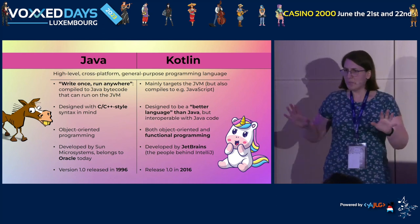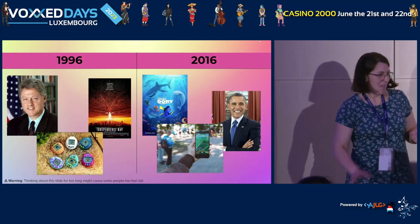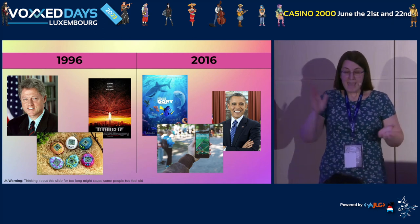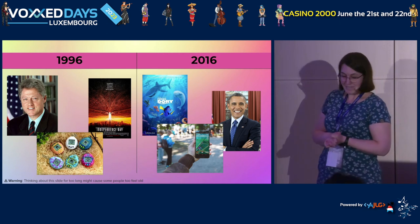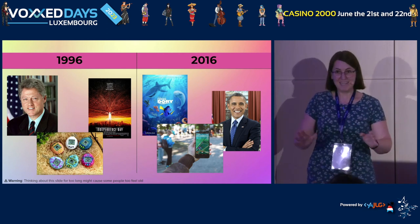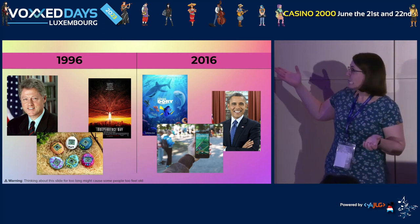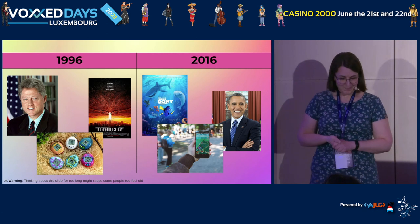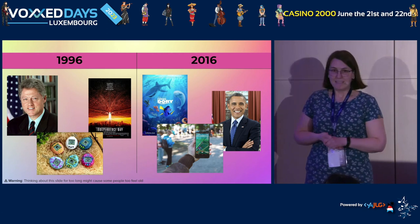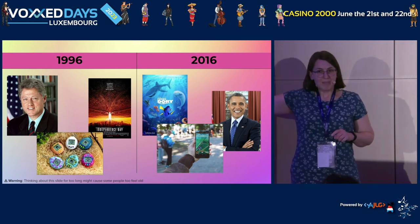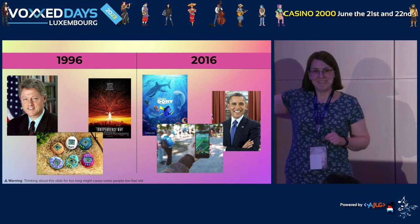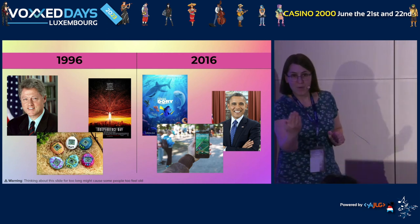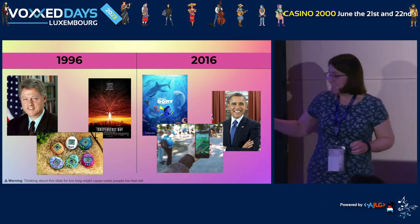Kotlin was released 20 years after Java, in 2016. To put those dates in perspective: in 1996, Bill Clinton was president, Independence Day was the highest-grossing movie, and the Tamagotchi had just been released. 20 years later we have Finding Dory, Barack Obama was president, and — who remembers this one? — 2016 was the year everyone was walking around with their phone in front of their face catching Pokémon.